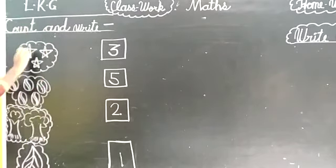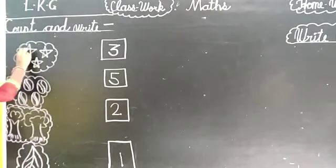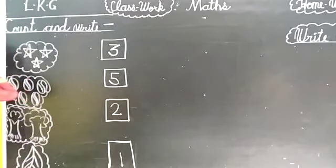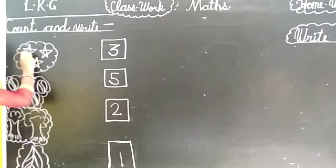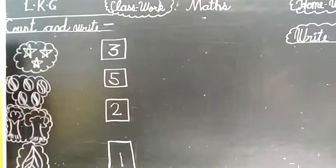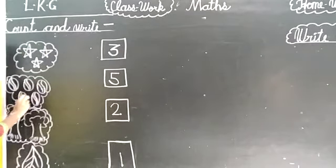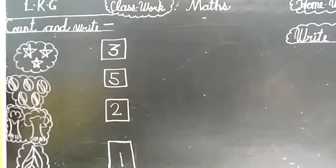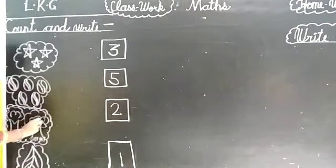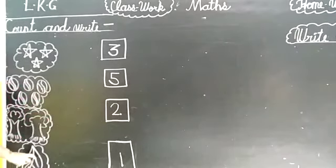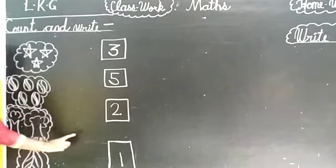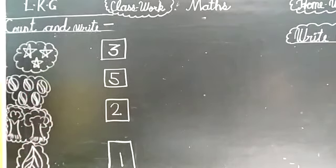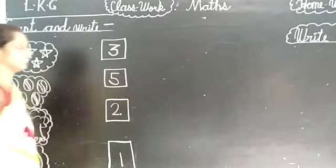How many stars are there? So let's count. One, two, three. Three stars. How many balls are there? One, two, three, four, five. Five balls. How many trees are there? One, two. Two trees. How many leaves? One. This is your class work.